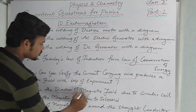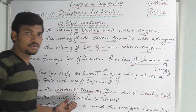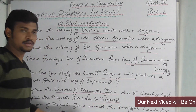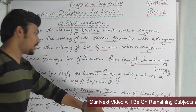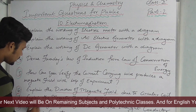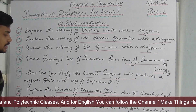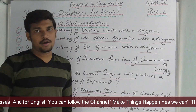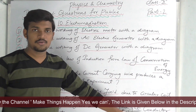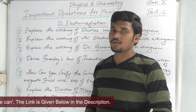Explain the direction of the magnetic field due to a circular coil. Explain the magnetic field due to a solenoid. Also explain the direction of the magnetic field around a straight conductor carrying current. These are different instruments and configurations you have to explain — straight conductor, solenoid, and circular coil. These are the important questions from the chapter Electromagnetism.